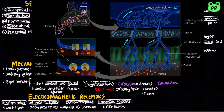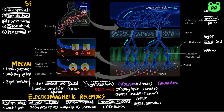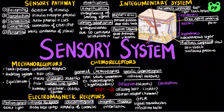In humans, odorants are detected by olfactory receptor cells that line the upper portion of the nasal cavity. These are G-protein coupled receptors that trigger a signal transduction pathway which sends action potentials to the olfactory bulb in our brain. Gustation is dependent on the detection of specific chemicals known as tastants. Taste receptors of insects are in sensory hairs called sensilla, which are located on feet and in mouth parts.